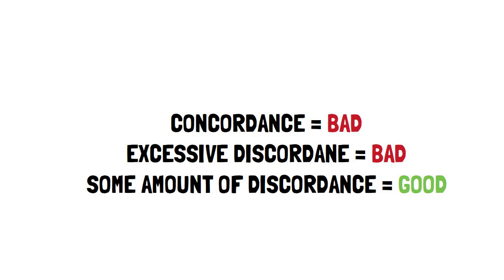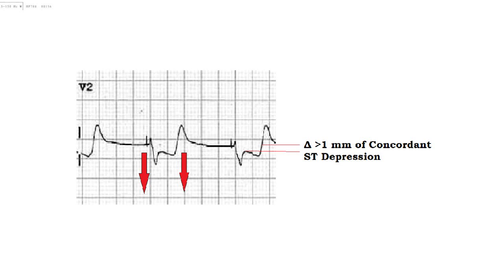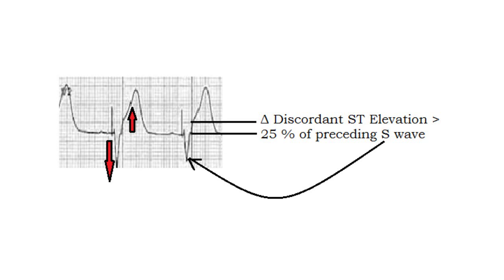In more technical terms, the Sgarbossa criteria are as follows. Number 1: concordant ST segment elevation of at least 1 mm in at least 1 lead. Number 2: concordant ST segment depression of at least 1 mm in at least 1 of the 3 leads V1, V2, or V3. Number 3: proportionally excessive discordant ST segment elevation in at least 1 lead, with at least 1 mm ST segment elevation defined as greater than or equal to 25% of the depth of the preceding S wave.